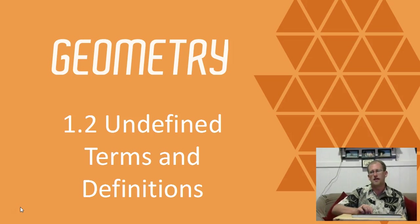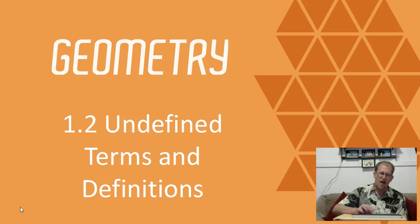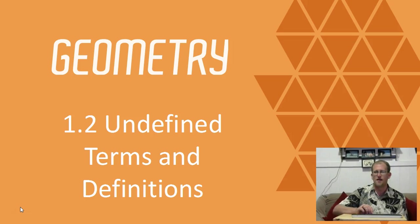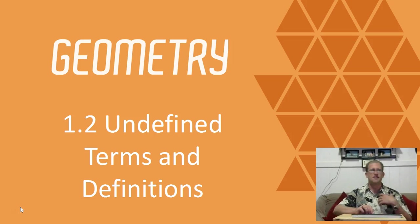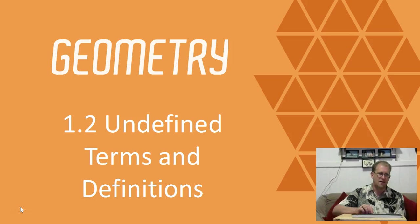We're going to be looking at undefined terms and definitions. The beginning of the section talks about what makes a good definition, then we'll talk about some things that are undefined, and give you our first set of truly geometric definitions. We're jumping into objects and spatial relationships that make up the classic story of geometry.